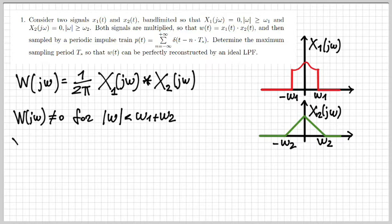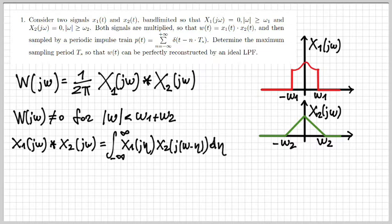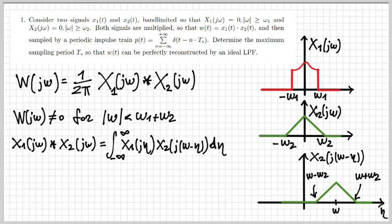If we want to derive this more carefully, we can write out the convolution between X1(jω) and X2(jω) using the integral definition: the integral of X1(jη) · X2(j(ω − η)) dη. Graphically, X2(j(ω − η)) is a mirrored and shifted version of X2, shifted by quantity ω. This shifted signal extends between ω − ω2 and ω + ω2. We need to determine for which values of ω this integral is non-zero.